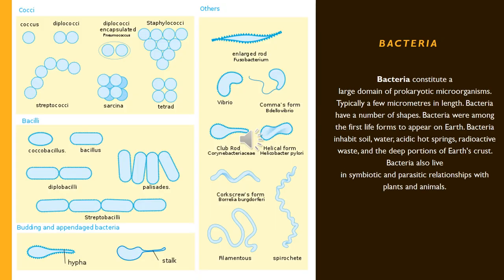Bacteria constitute a large domain of prokaryotic microorganisms, typically a few micrometers in length. Bacteria have a number of shapes and were among the first life forms to appear on Earth. They inhabit soil, water, acidic hot springs, radioactive waste, and the deep portions of Earth's crust, and also live in symbiotic and parasitic relationships with plants and animals.